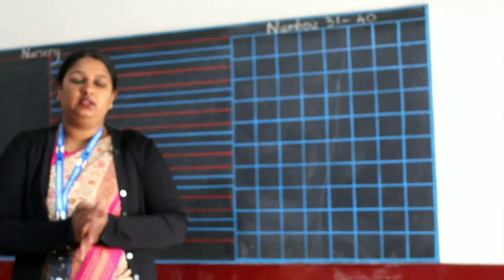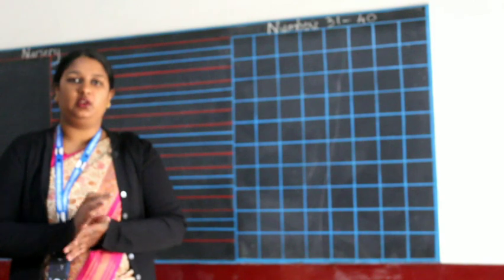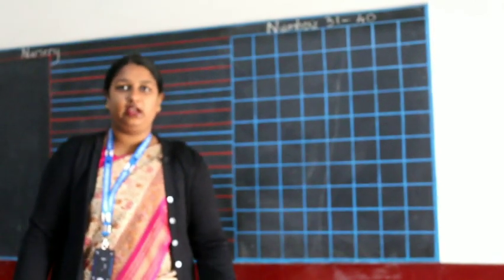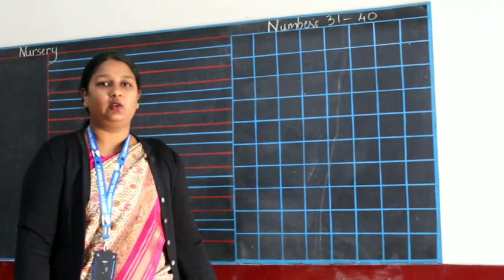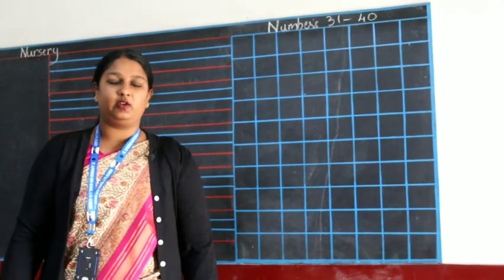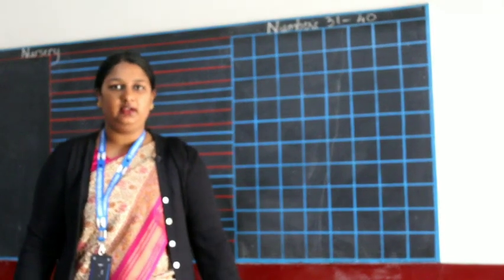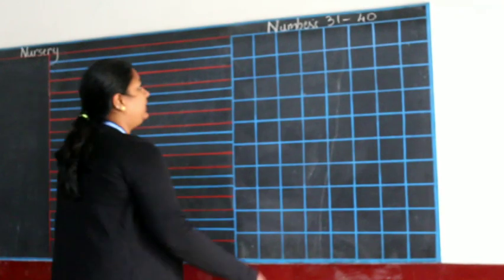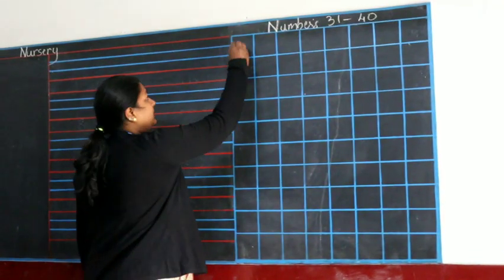Good morning children. I want you all to write numbers from 1 to 30 in your square line notebook and also today we will learn how to write 31 to 40. So, what you will have to do is write your numbers from 1 to 30 and continue from 31 to 40. We start writing from 31.